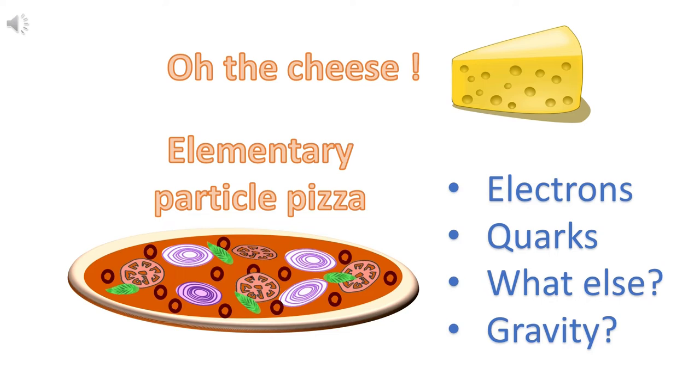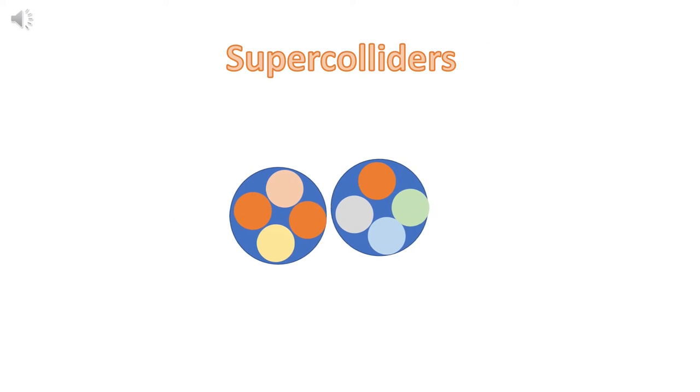which is like the cheese of this pizza? Elementary particles are discovered in super colliders by smashing big particles into one another. Or is there another way to know how many particles are there? The answer is yes, and it involves gravity.